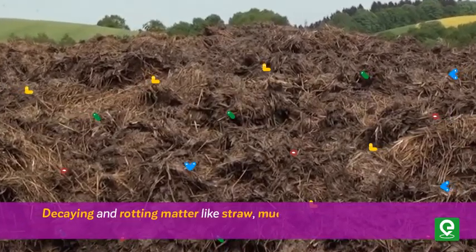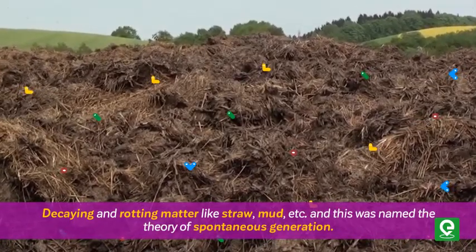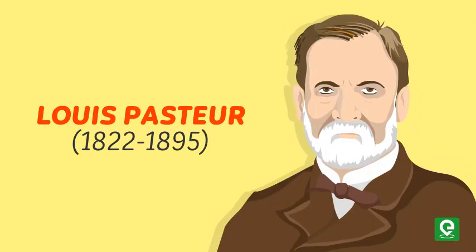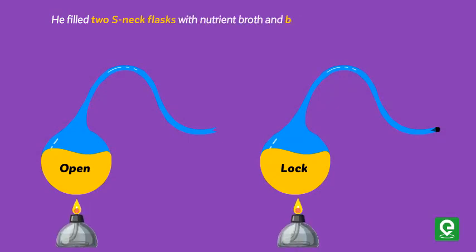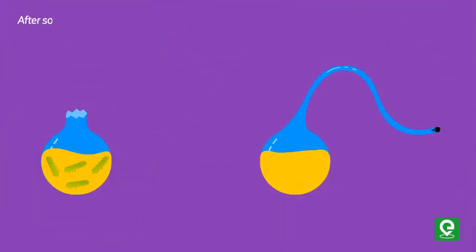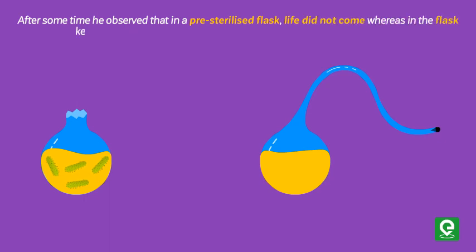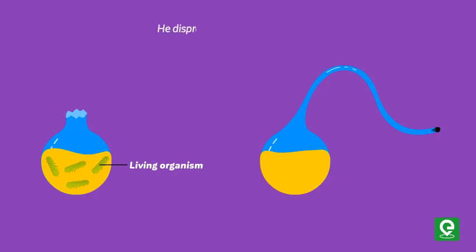Early Greek thinkers thought that life came out from decaying and rotting matter like straw, mud, etc., and this was named the theory of spontaneous generation. Later, Louis Pasteur conducted the S-curved neck flask experiment. He filled two S-neck flasks with nutrient broth and boiled them — one was kept sealed and another was open to air. After some time, he observed that in the pre-sterilized flask, life did not arise.